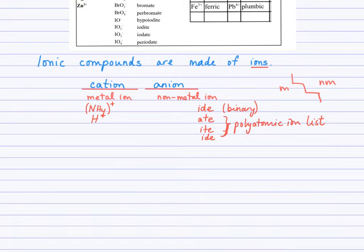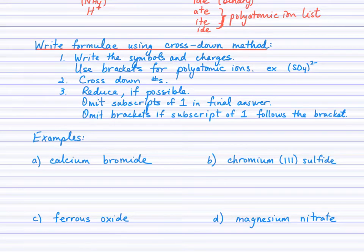So, let's look then at the method for writing formulas of ionic compounds. We are going to use the cross-down method to write formulas of ionic compounds. First, we'll write the symbols and charges. If we use a polyatomic ion, we'll be sure to put brackets. For example, with the sulfate ion here, you see I've put the brackets around the SO4 and put the charge outside the brackets as a superscript. We're going to cross down the numbers, omitting the signs, and then reduce if possible. If we have subscripts of 1 in the final answer, we're going to omit them. And we're going to omit brackets if the subscript is 1 right after the bracket.